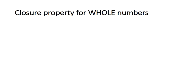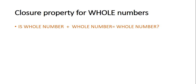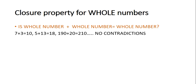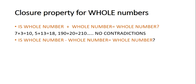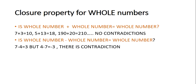Let us now move forward to talk about whole numbers. In the same way that we studied natural numbers, we are going to study closure property of whole numbers. Again for addition, whole number plus whole number gives a whole number — the answer is yes. There will be no contradiction; if you keep adding whole numbers you will get whole numbers. But there is a contradiction when we subtract two whole numbers.